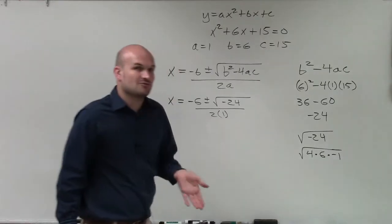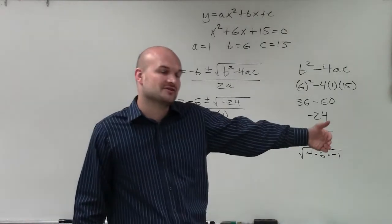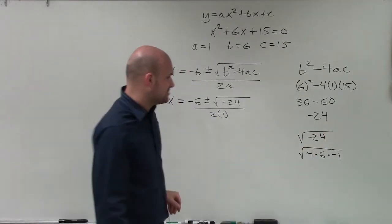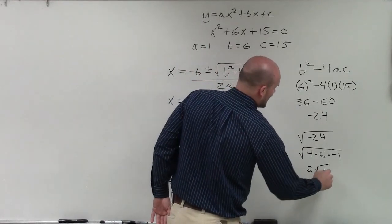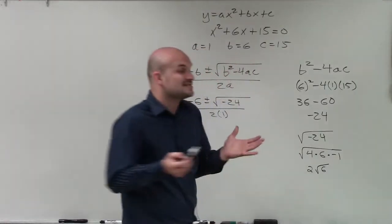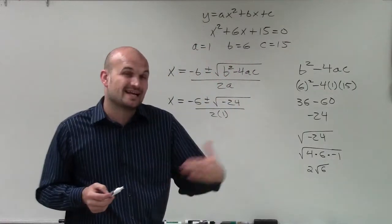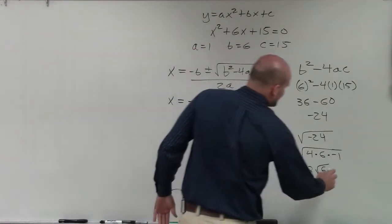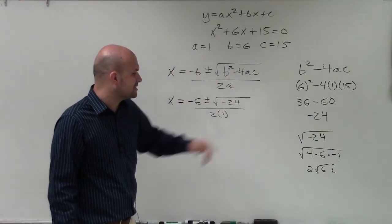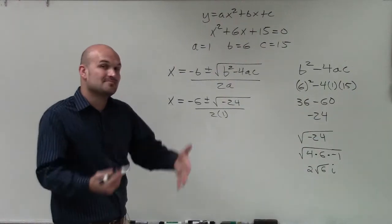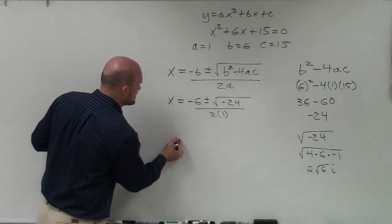Now, remember, we cannot take the square root of negative 1. That's why I'm factoring that out so I can rewrite that as a product. I can take the factor of 4, which will be 2. Then I have to leave the square root of 6 out there. And instead of leaving the square root of negative 1 under there, I'm going to rewrite this as our imaginary unit, i. So therefore, now my new discriminant is going to be 2 square root of 6i. And that's important as far as me being able to simplify my solutions.